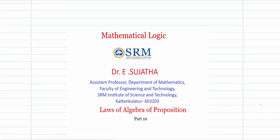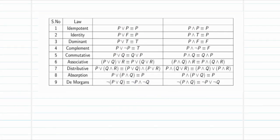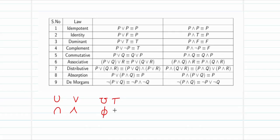Hello friends, welcome to this 10th video on Mathematical Logic. We are going to see about laws of algebra of propositions in this video. We already have seen the laws of algebra for set theory. The laws are very much identical — the substitutions we need to make are: union is replaced with disjunction, intersection with conjunction, the universal set with truth value, and the null set with false.